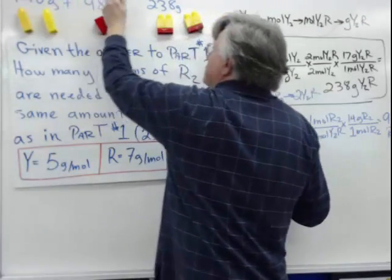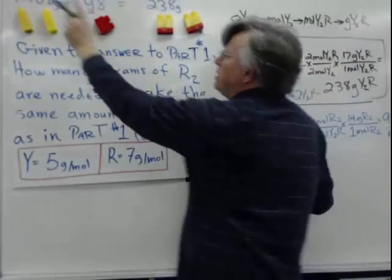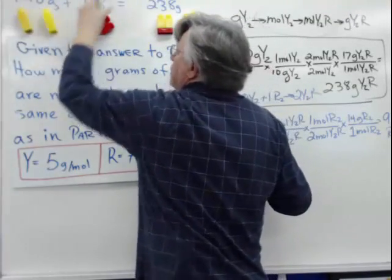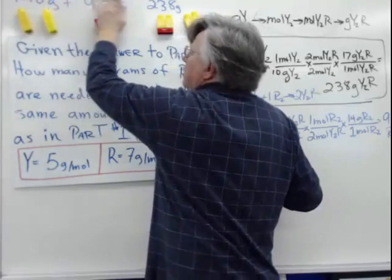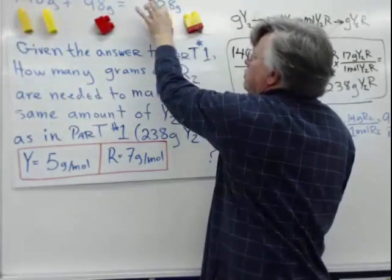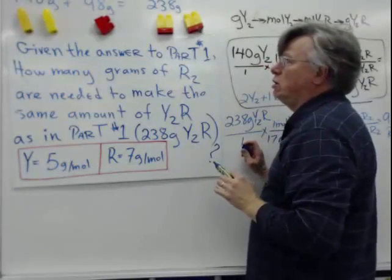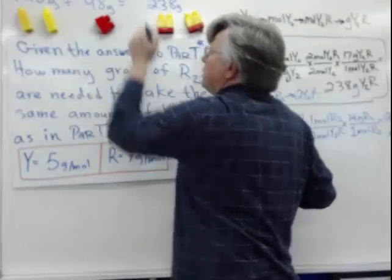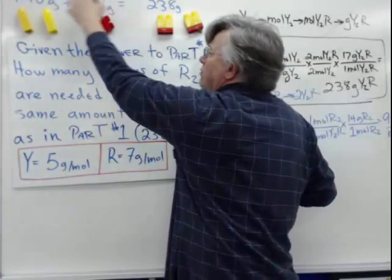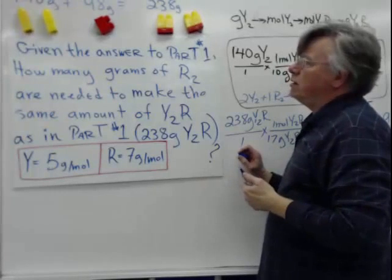Let's make an observation: the total amount on the reactant side — 140 plus 98 grams — must equal the total number of grams on the product side for stoichiometry to hold. What we're proving here is that mass cannot be created or destroyed; we have the same amount of grams on both sides of the equation.